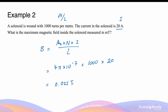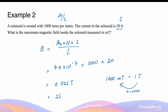To convert this into milli-Teslas, we remind ourselves that to go from Teslas to milli-Teslas we multiply by 1000. So multiplying 0.025 by 1000 gives an answer of 25 milli-Teslas.